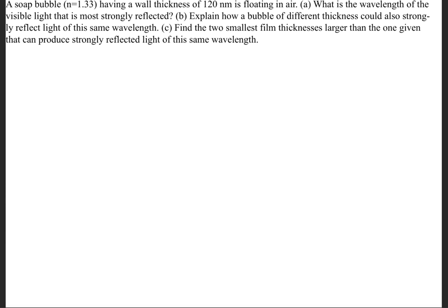Part A is asking what is the wavelength of the visible light that is most strongly reflected. That alone gives a hint that we're going to be using the constructive interference formula, and now we have to figure out if this is a reflective or non-reflective coating.